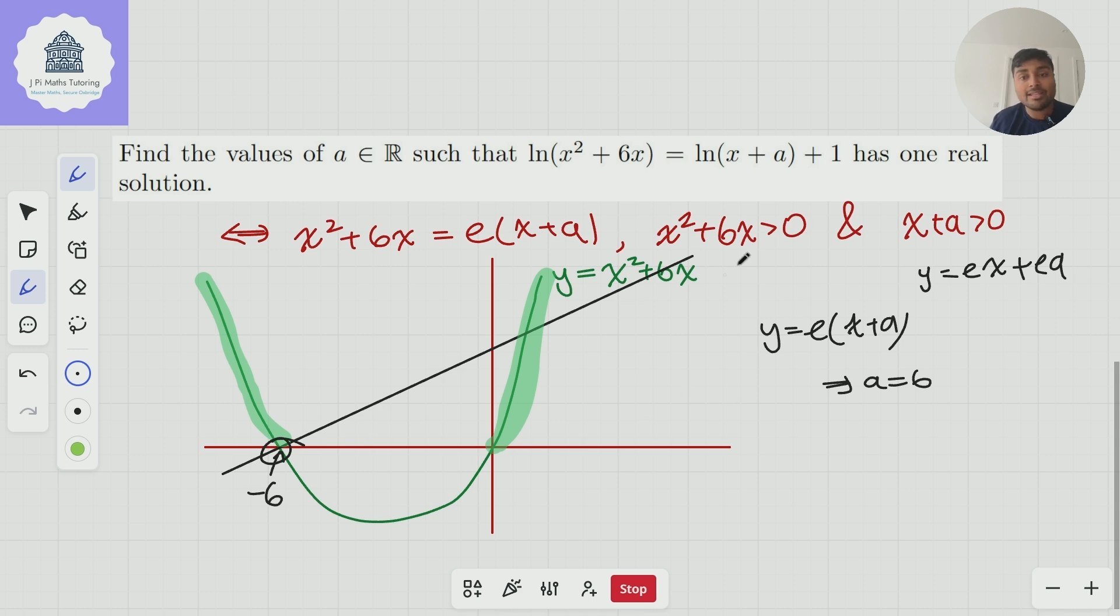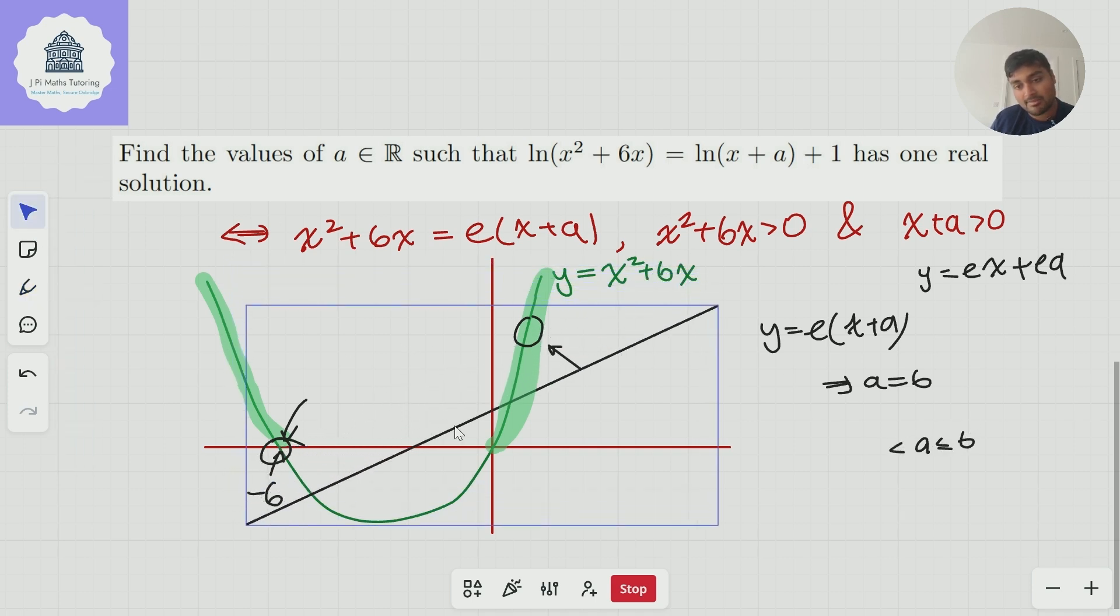So therefore what are the range of possible values of a? Well a could be 6. That is allowed because when a equals 6 we have exactly one solution. This guy here. This one doesn't count because at this point x² + 6x is 0. And as we said x² + 6x has to be positive. So a can be equal to 6. And what's the lower bound? Well it's 0 as we said a second ago. So if we bring this line back down.